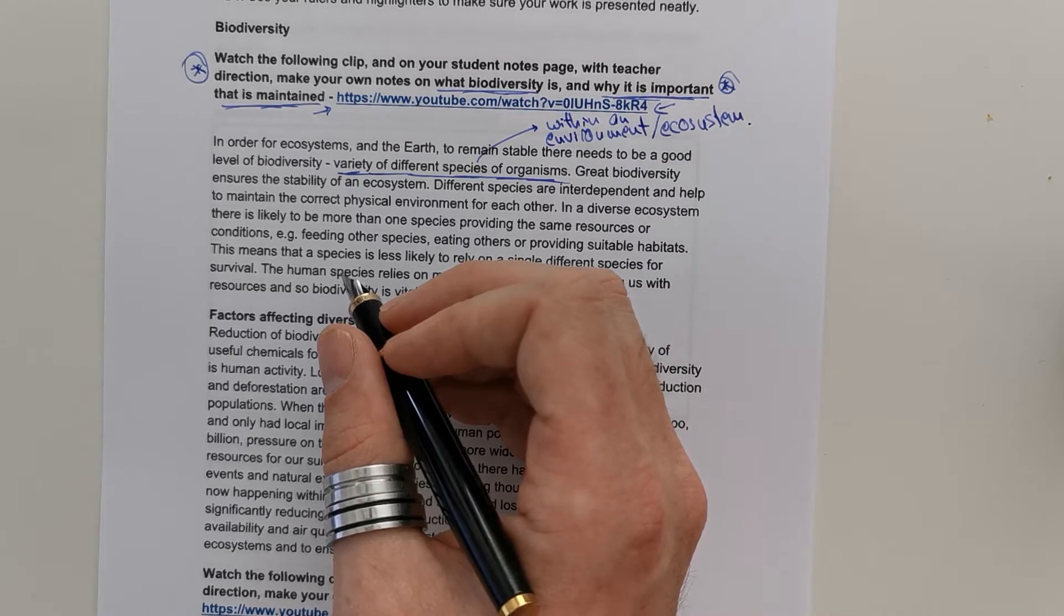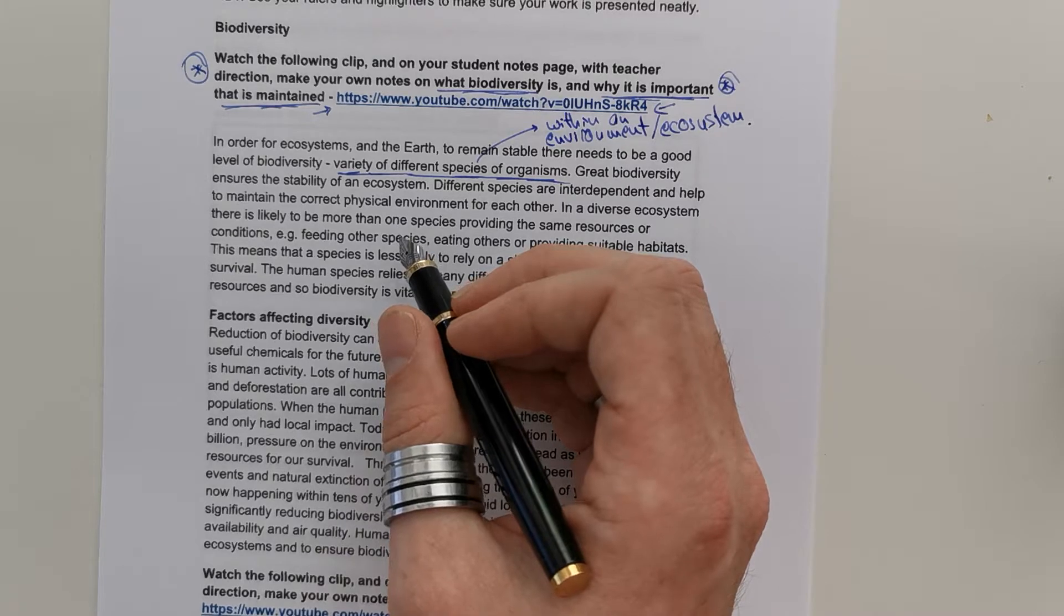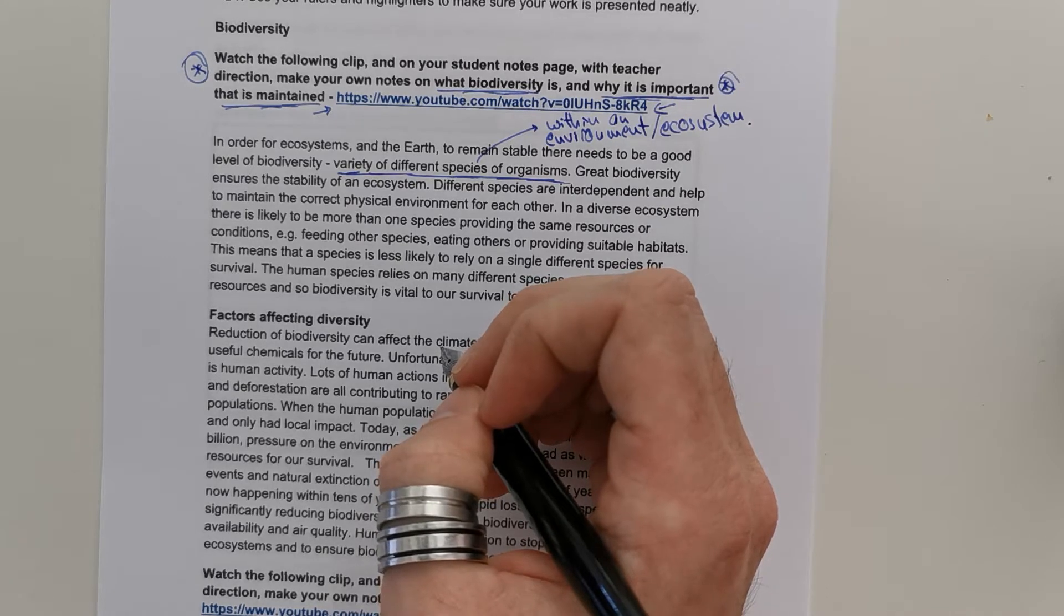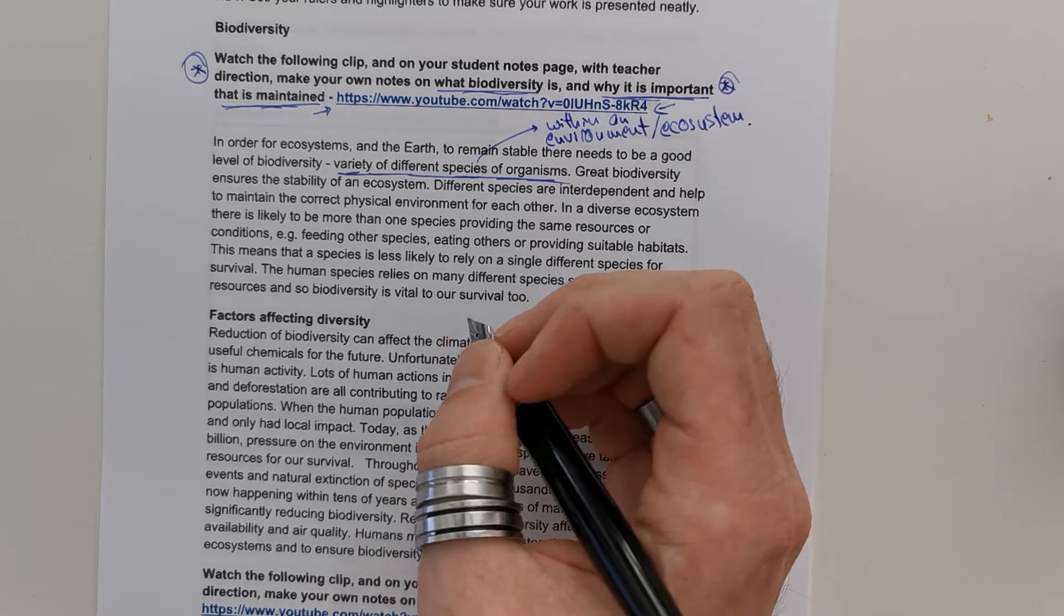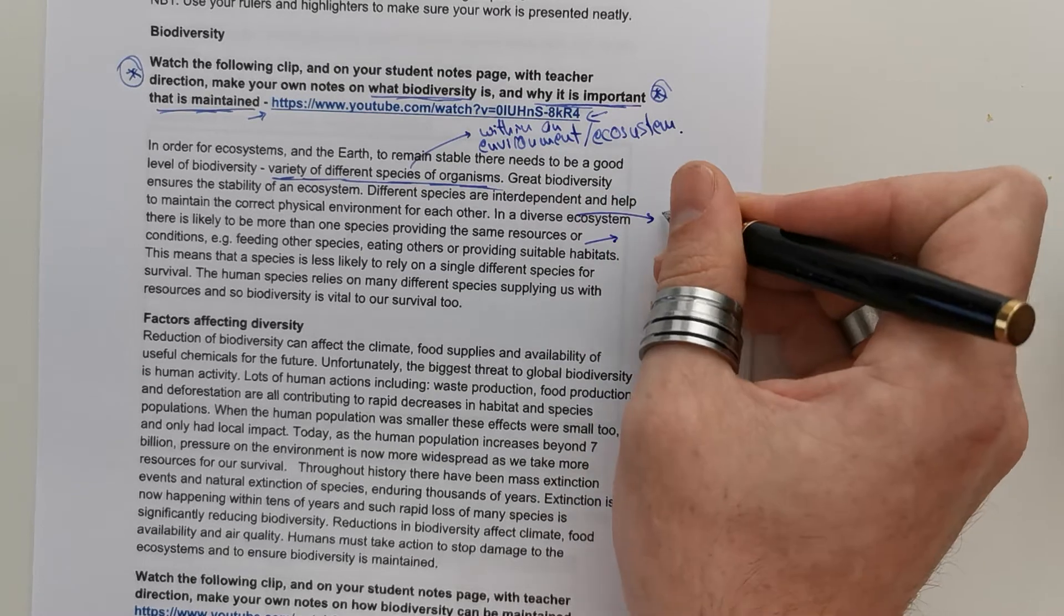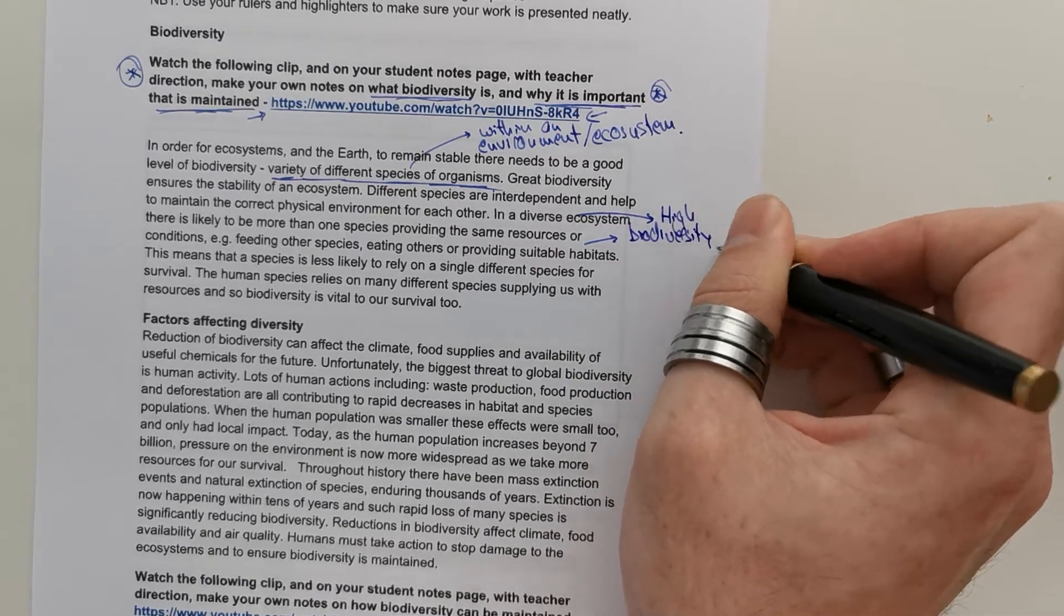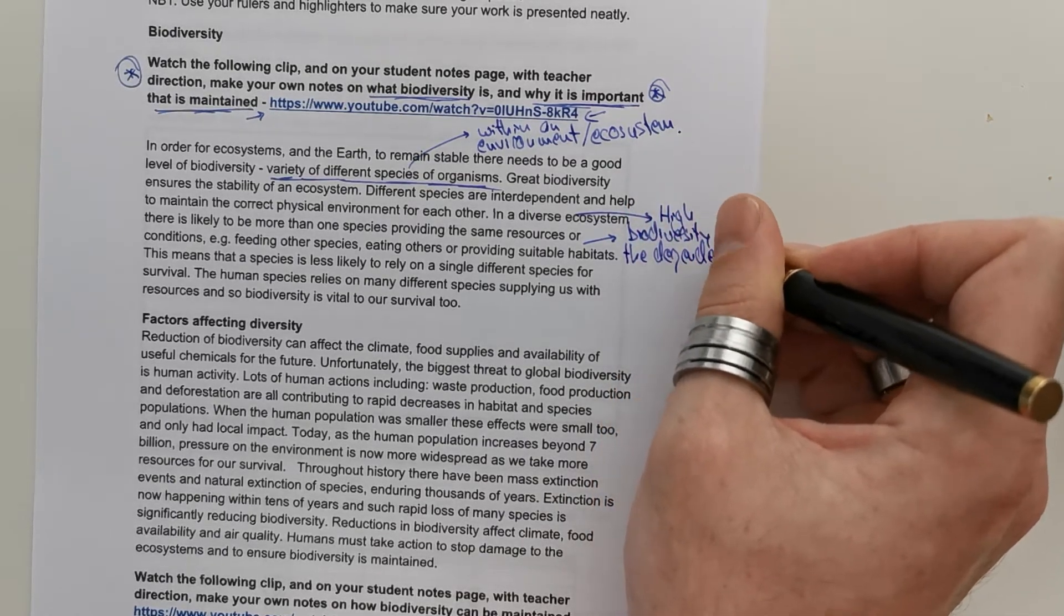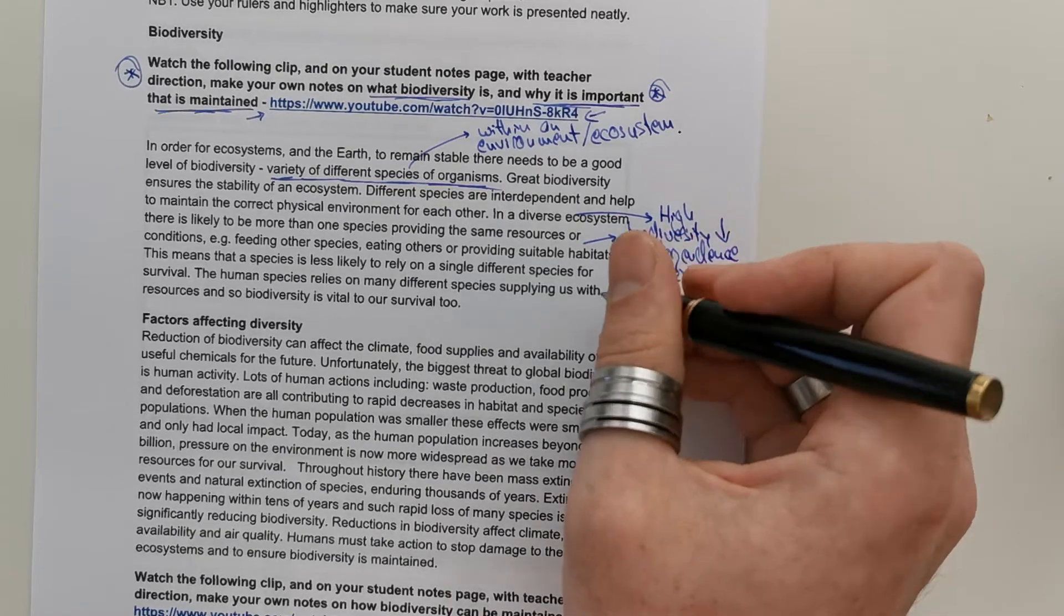Great biodiversity ensures the stability of an ecosystem. Now, the question is, why? Different species are interdependent and help to maintain the correct physical environment for each other. In a diverse ecosystem, there's more likely to be more than one species providing the same resources or conditions, e.g. feeding other species, eating other species, or providing suitable habitats. So, that's the key point.